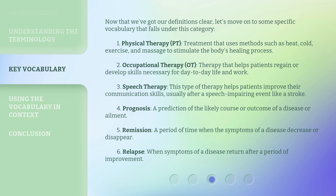4. Prognosis: A prediction of the likely course or outcome of a disease or ailment. 5. Remission: A period of time when the symptoms of a disease decrease or disappear. 6. Relapse: When symptoms of a disease return after a period of improvement.